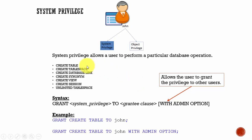Some of the system privileges a user can have include: create table, create tablespace, create database link, create synonym, create view, create session, and unlimited tablespace.